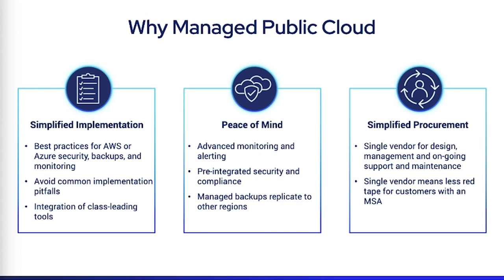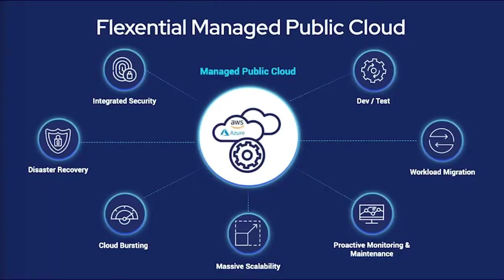AWS, Azure, and Google state clearly in their SLAs that it's up to you to design and provision your systems in a resilient fashion. To do that you need to know what architectures provide what kind of availability and resiliency. If you don't have that skill in-house, strongly recommend engaging a partner for the design, architecture, migration and implementation, or even ongoing management.